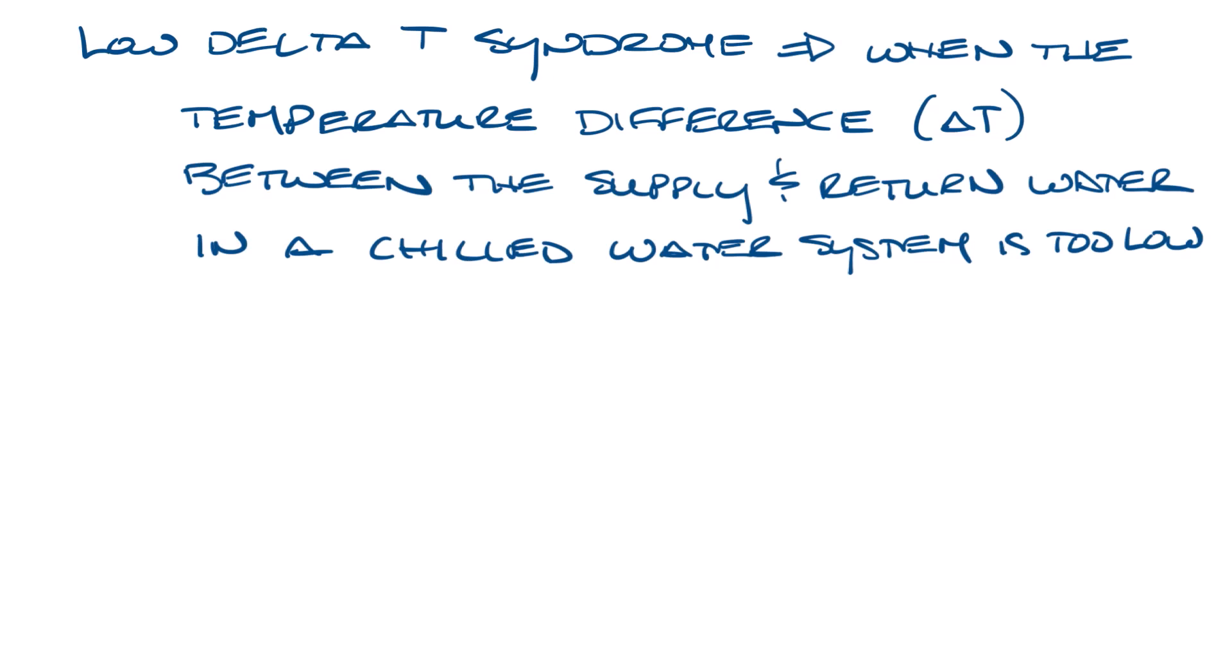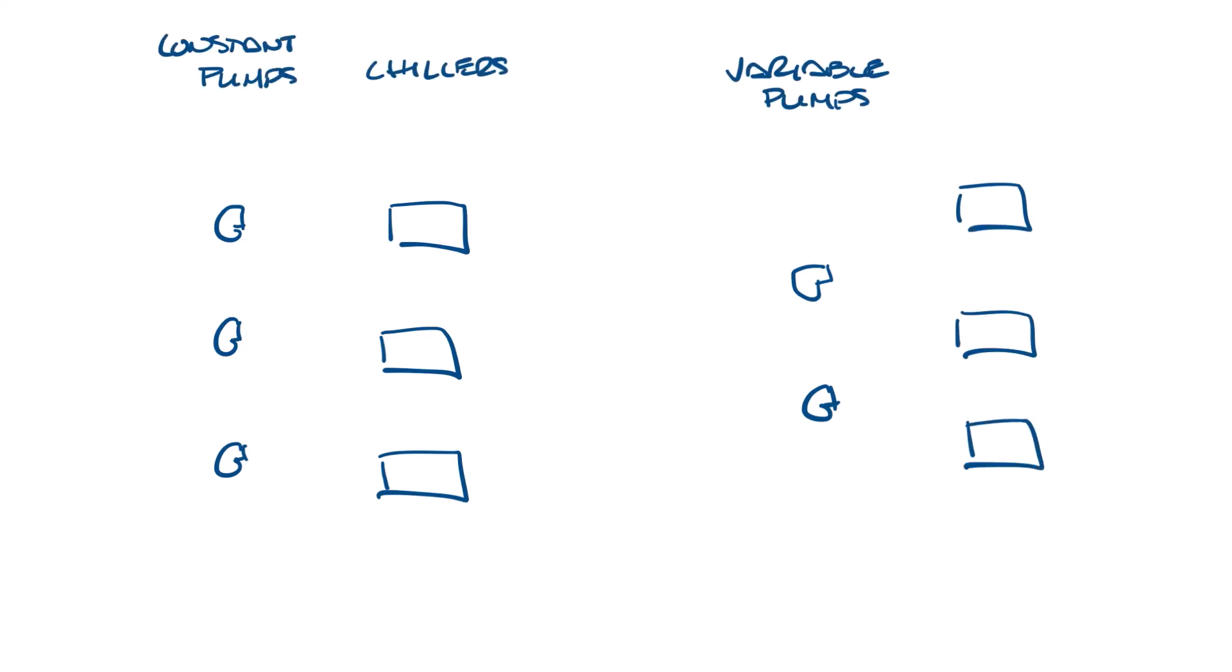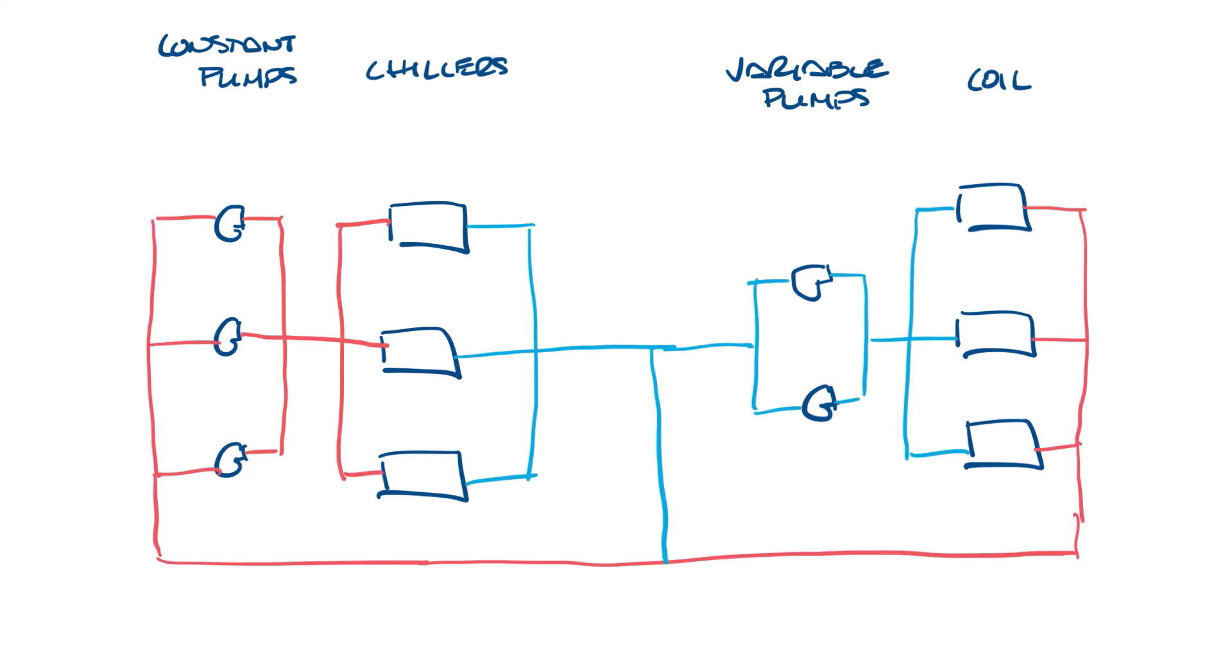Let me move this up and draw the primary secondary system that I showed last week. So we'll have primary pumps and chillers, and then we'll have the secondary pumps and the water coils, and then let's label them and draw in the piping and the decoupler. And so this is the primary side and this is the secondary side.